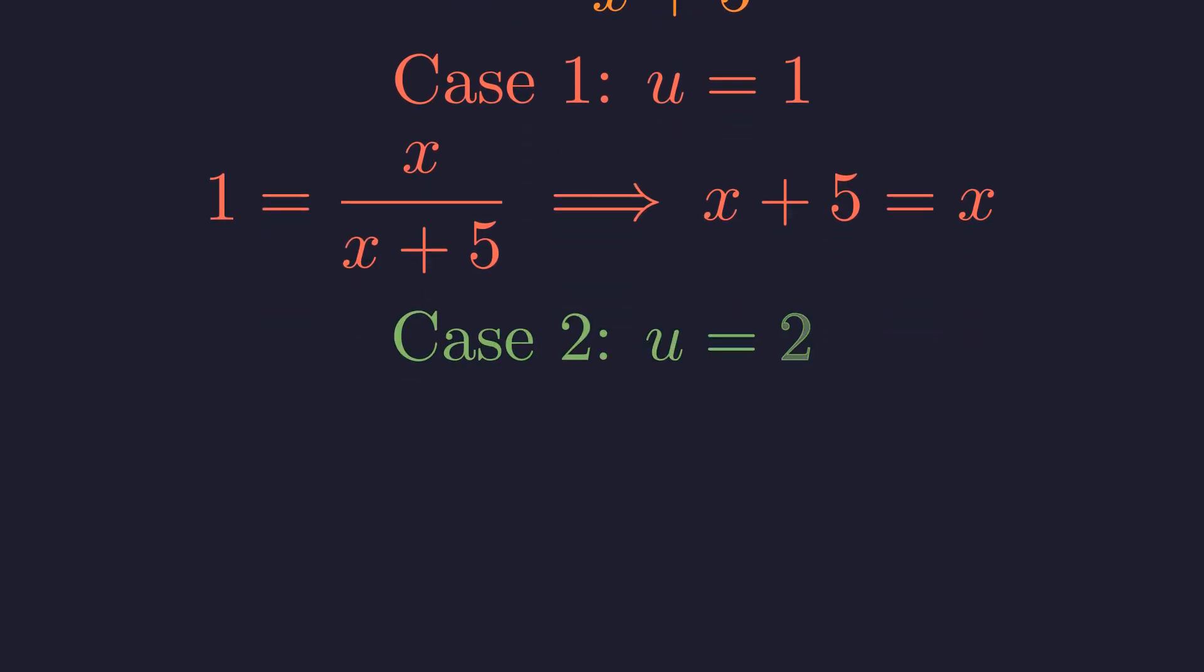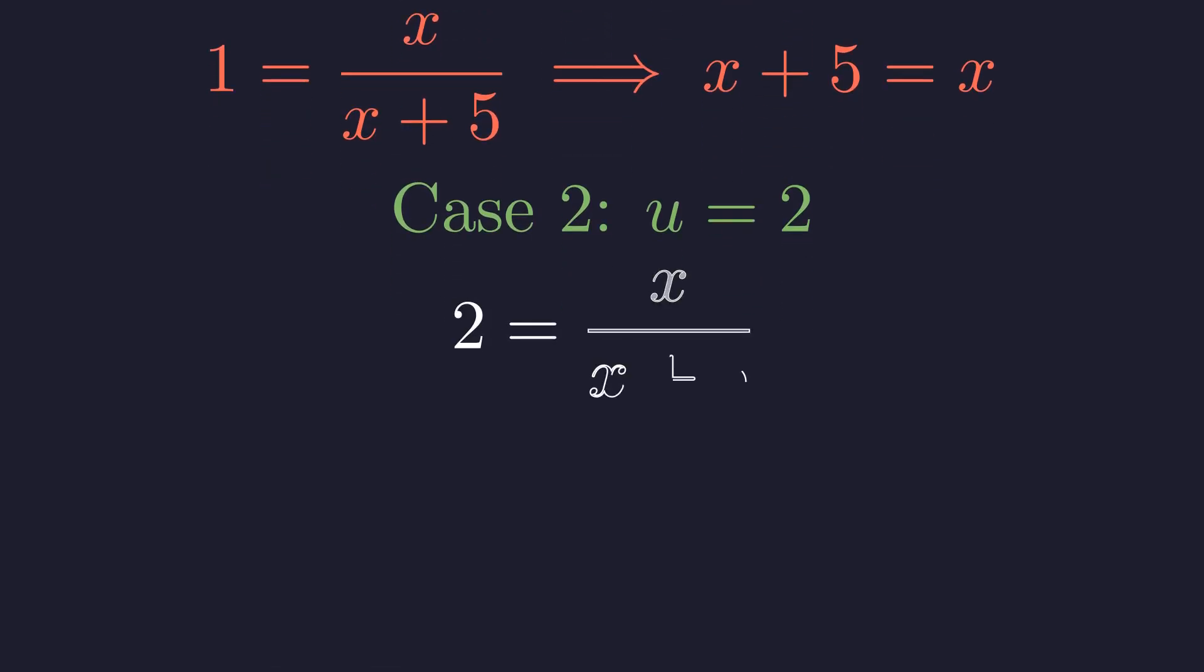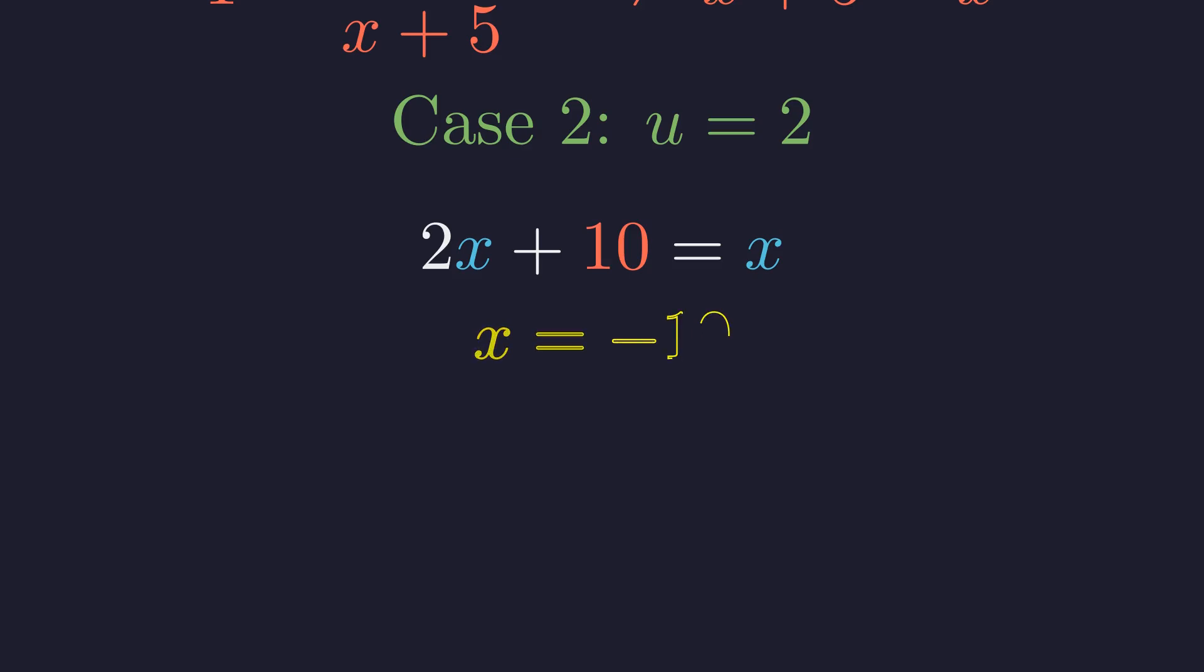Next, we test the case where u equals 2. We set the expression equal to 2. Multiplying by the denominator gives 2 times x plus 5 equals x. Distributing results in 2x plus 10. Rearranging to isolate x, we find the final solution: x equals negative 10.